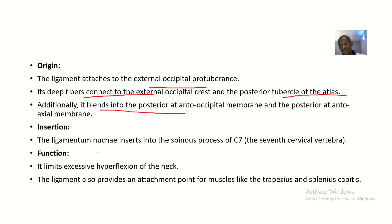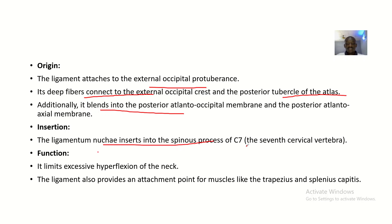Additionally, it blends into the posterior atlanto-occipital membrane and the posterior atlanto-axial membrane. For its insertion, the ligamentum nuchae has one insertion — it inserts on the spinous process of the C7 vertebra.